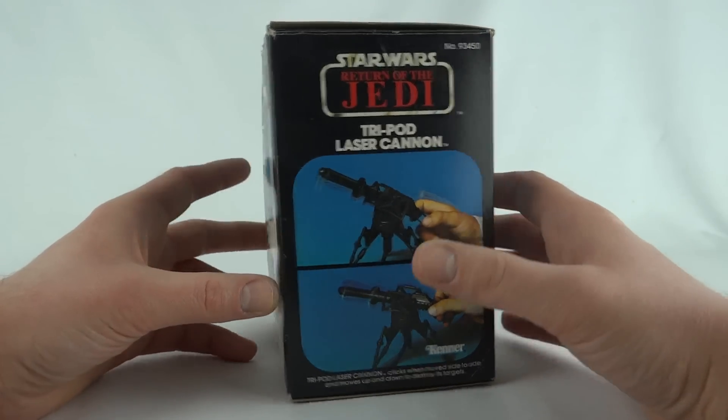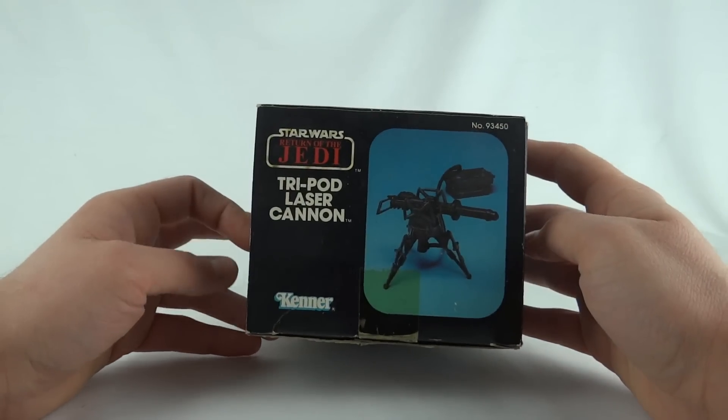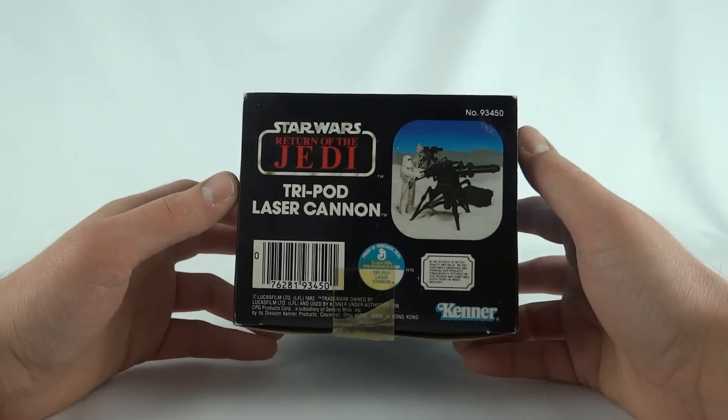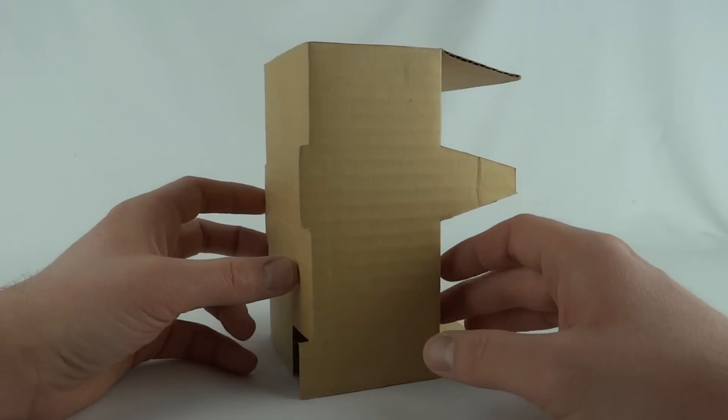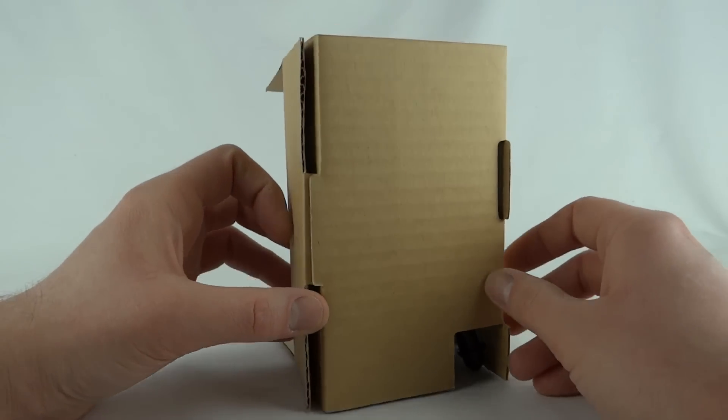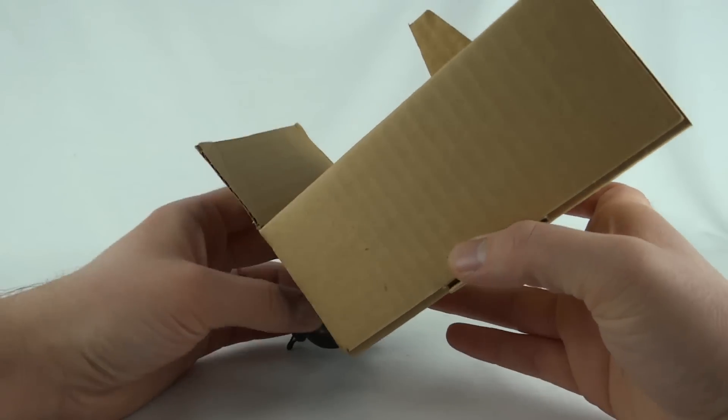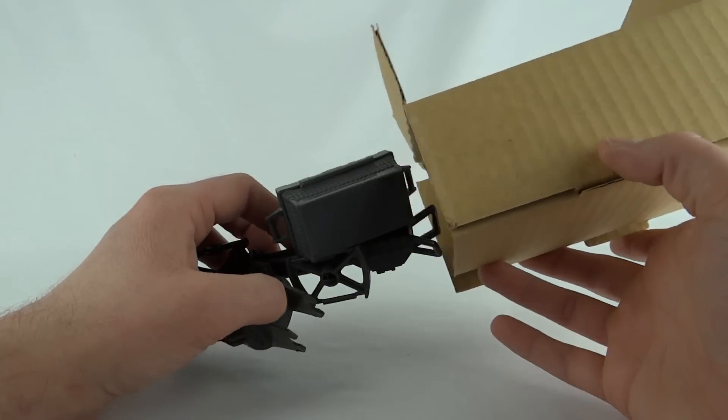On the top, another picture of the toy, and underneath we've got Lucasfilm 1982. This actually includes the cardboard insert. I'm not sure if this is an original or it's been redone, but there you go.